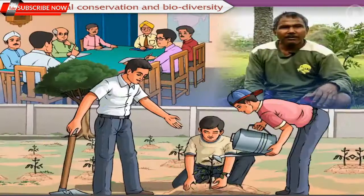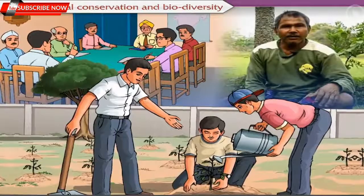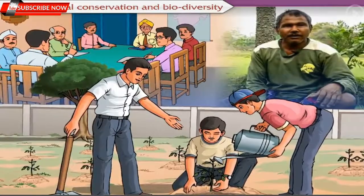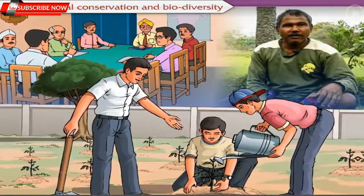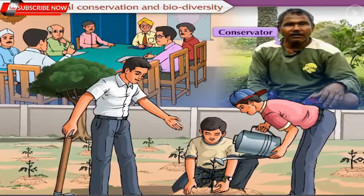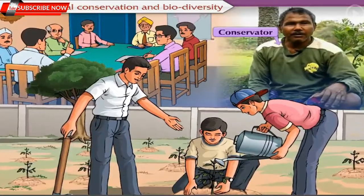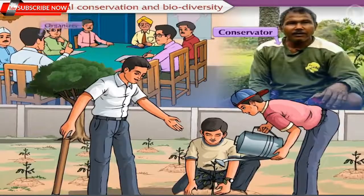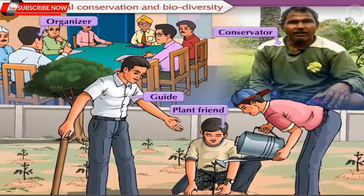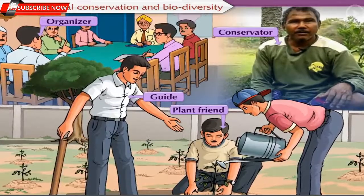For the prosperity of the living world, the positive role of human beings is important. We can play different roles like that of a conservator — a person responsible for the repair and preservation of things of environmental interest — organizer, guide, or plant friend, to protect and conserve our environment.